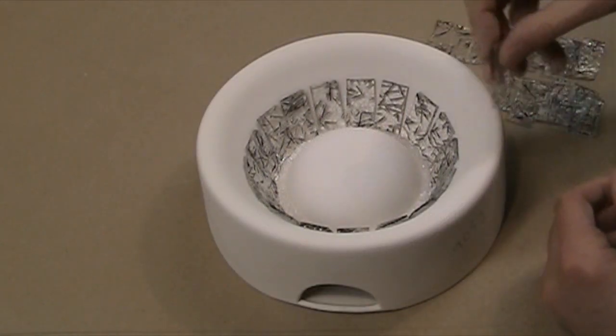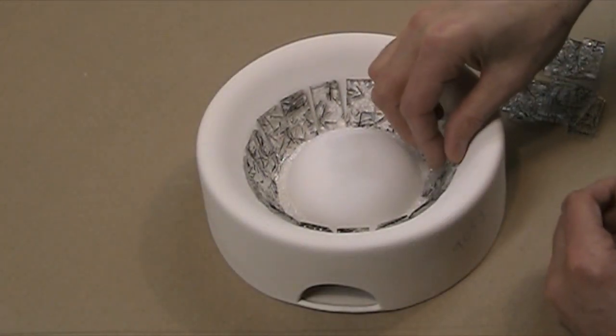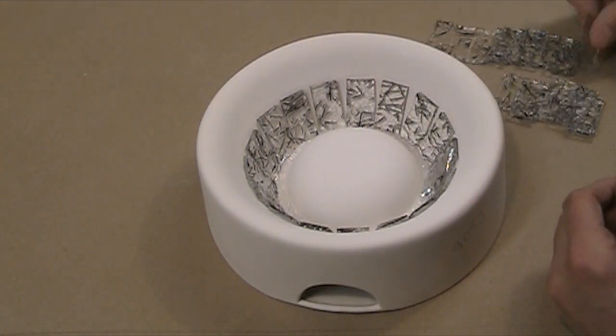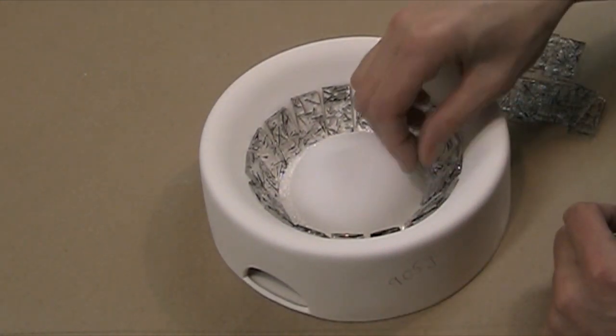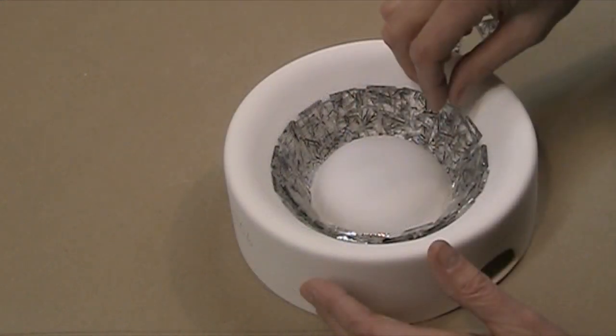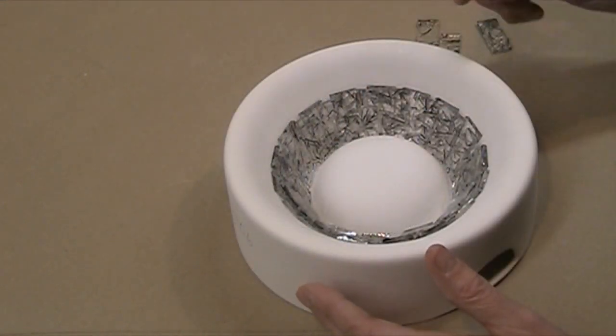We add a second ring of tiles to the mold. This time we alternate between large and small tiles. Additionally, the textured side of the glass faces outwards. Be careful not to scratch off the primer when filling the mold.